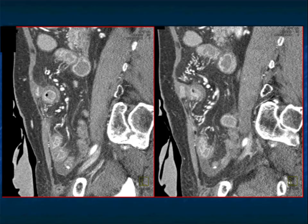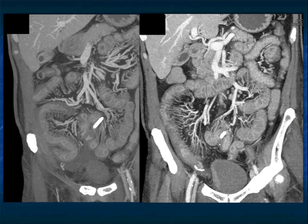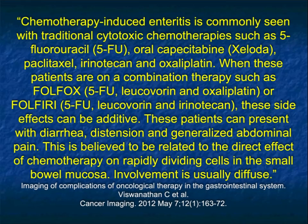Here it is again — the thickening of bowel, the halo sign, mucosal enhancement: a beautiful example of enteritis secondary to the patient's chemotherapy. Chemotherapy-induced enteritis is commonly seen with certain agents like 5-FU and oxaliplatin, which are very common in pancreatic cancer. Patients often will get multiple therapies, and with chemotherapy these effects can be additive, making it more problematic.